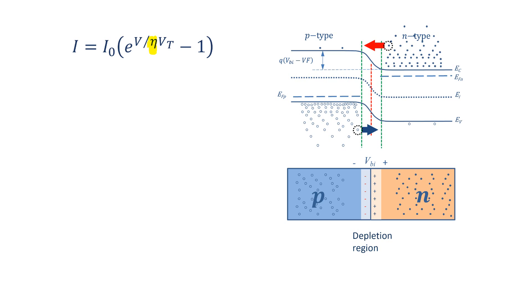In a p-n junction in forward bias, free electrons diffuse from n-type to p-type and recombine with holes. In the same way, holes diffuse from p-type to n-type and recombine there with free electrons. This is how the current is formed in a p-n junction diode, and it is the basis for deriving the diode equation.